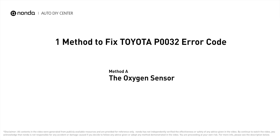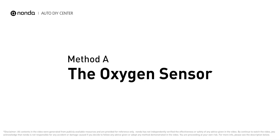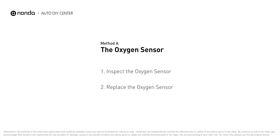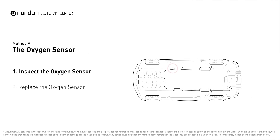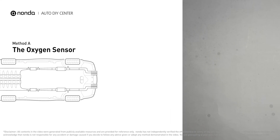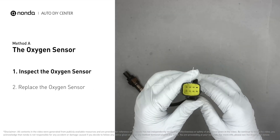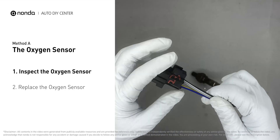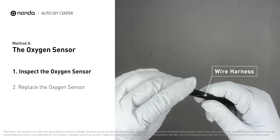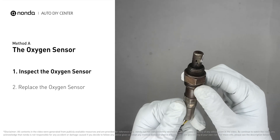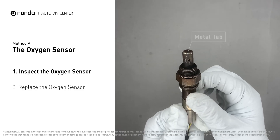Method A: the oxygen sensor. This oxygen sensor is located right before the catalytic converter. Bank one is on the side with cylinder number one; sensor number one is usually the one in the exhaust manifold. Visually check the oxygen sensor's electrical connections, wire harness, and metal tabs for any damages.